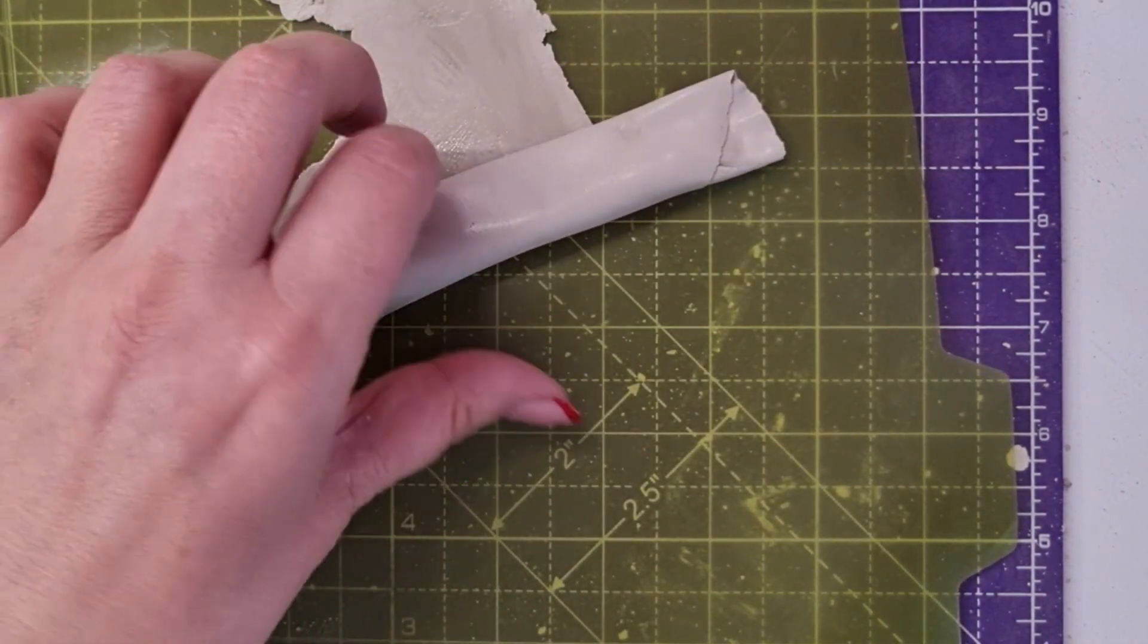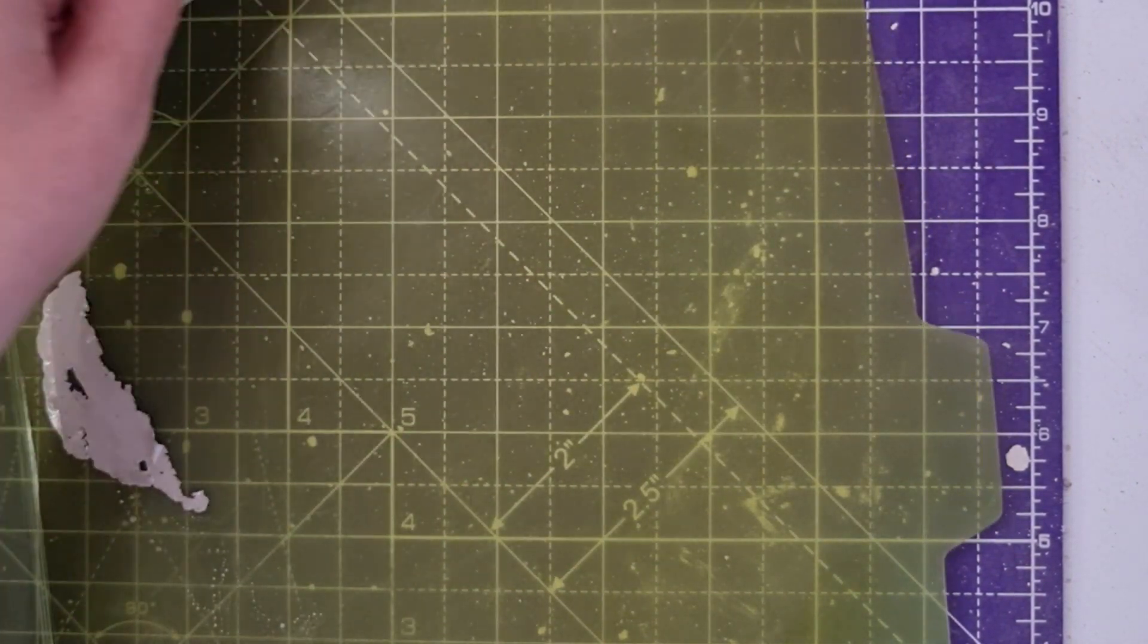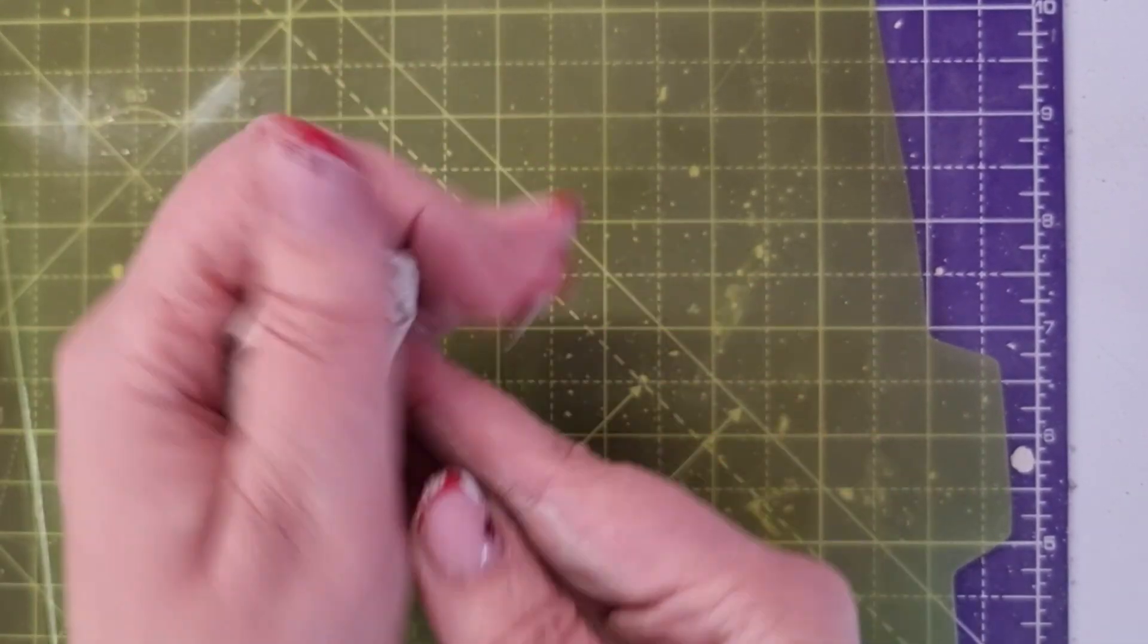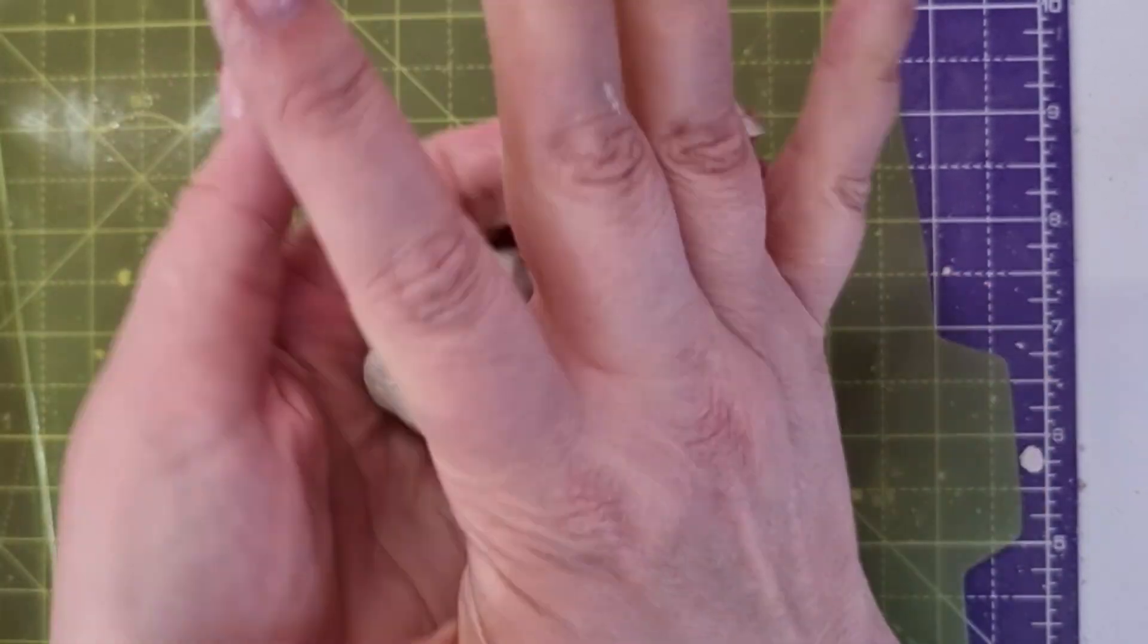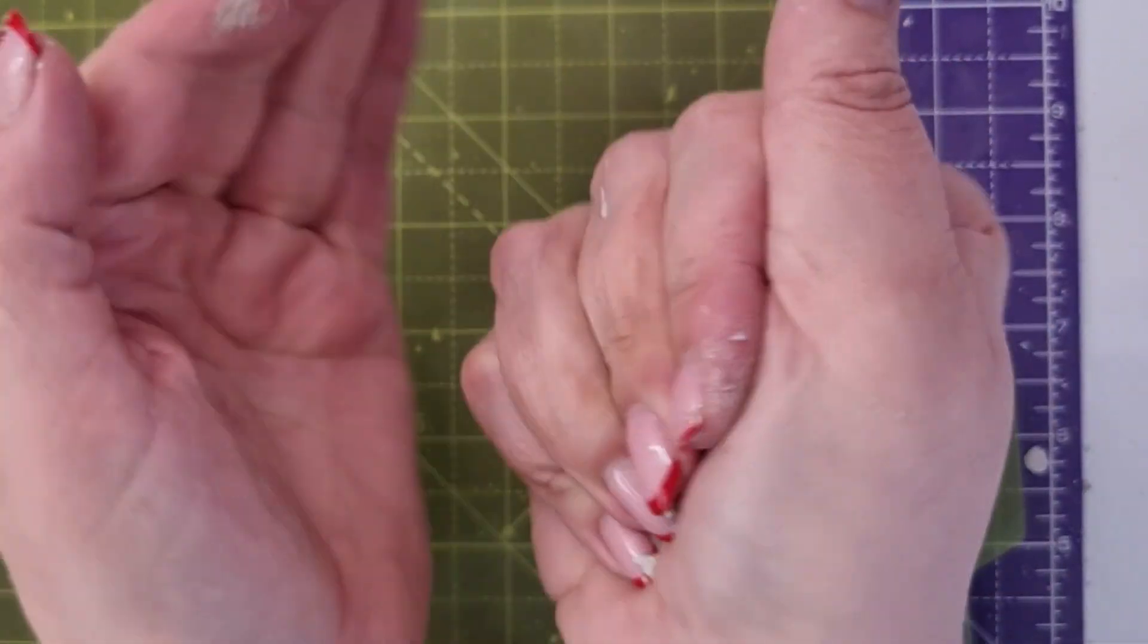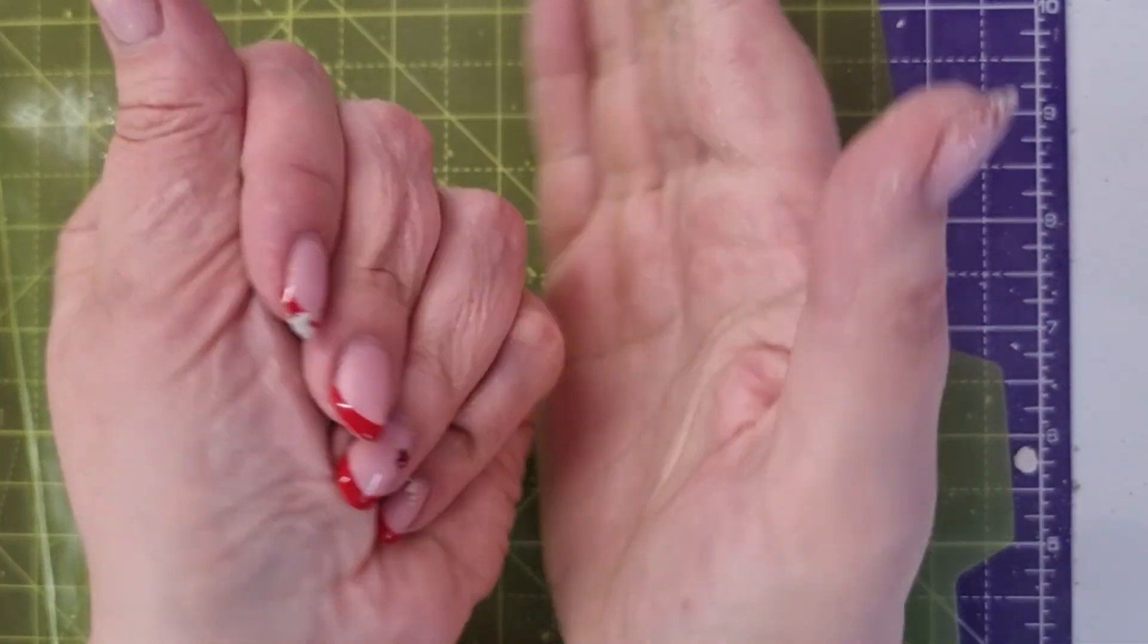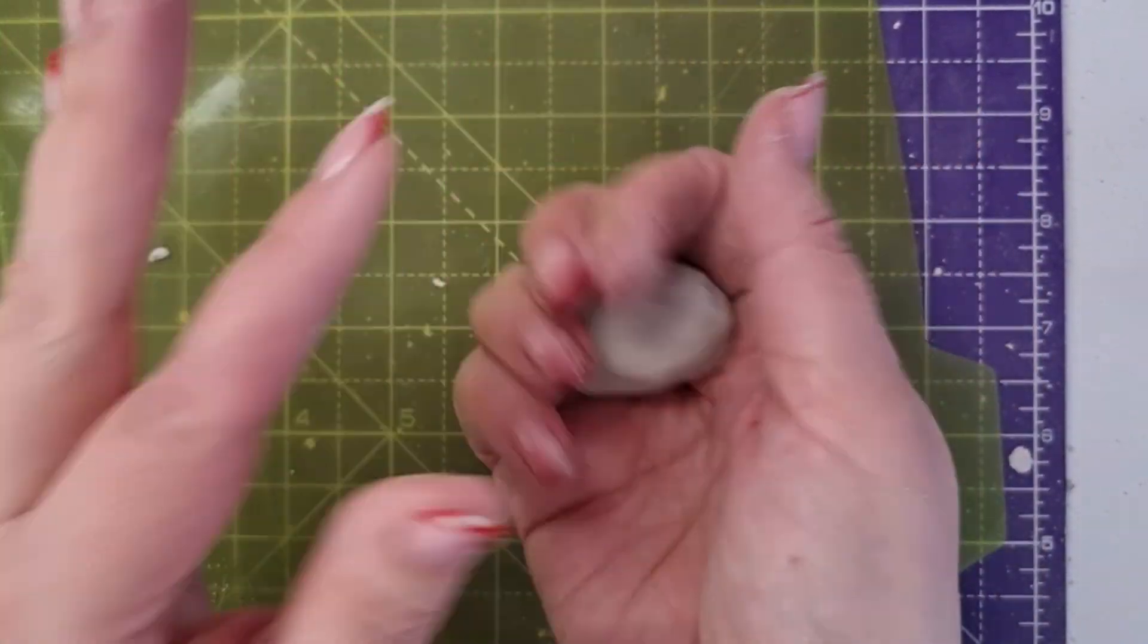If you've got to the point where the water is kind of sitting on top and it's not being absorbed into the clay, then that's definitely a sign to stop what you're doing and wrap it up.